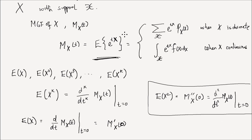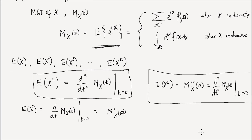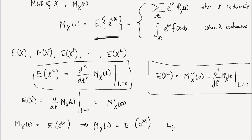I will make another video proving that this is true and provide a link for the proof. Note also that when you plug in 0 into the MGF, since the MGF is the expectation of e to the tx, you're finding the expectation of e to the 0 times x, which is the expectation of 1, which equals 1. So when you plug in 0 into the MGF, the value you find is always equal to 1.